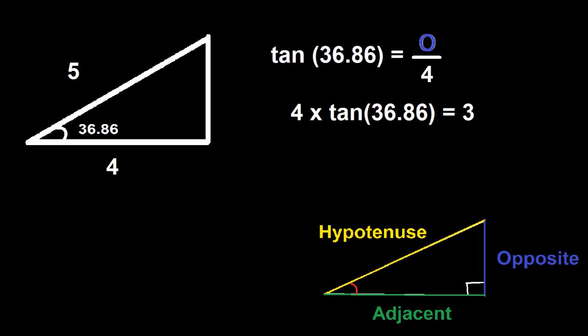So now let's figure out what the opposite side is. We could just use the Pythagorean theorem, but I'm going to show you how to use this method instead. So you take the tan of 36.86, and this equals the opposite over adjacent, so opposite over 4. So we rearrange that, and we get 4 times tangent of 36.86 equals 3.